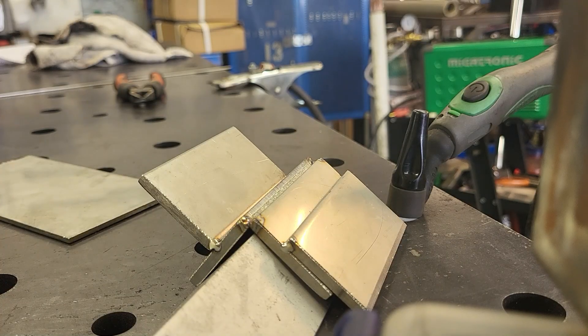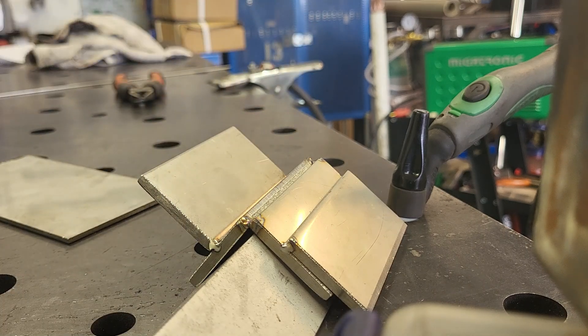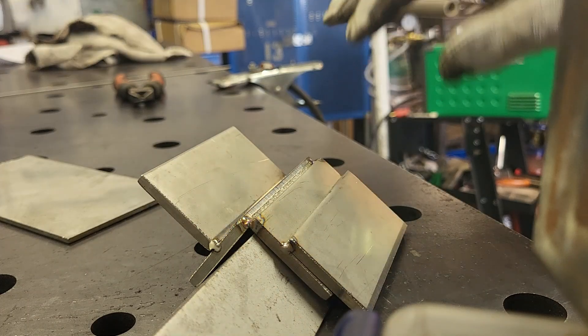Alright guys, I'll be starting with one of the easiest joints, which is the outside corner joint. You have great visibility and access to the weld. And as for the amperage, I'll be going down to about maybe 100, 110.